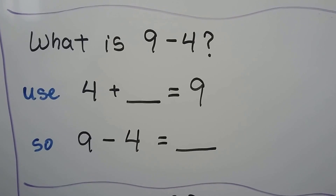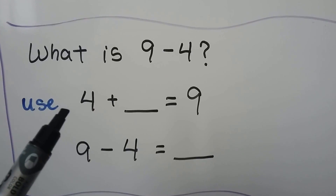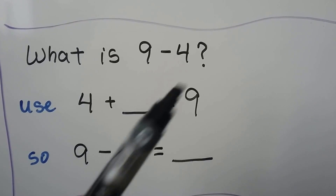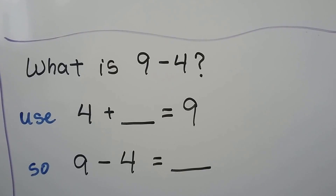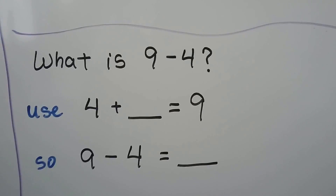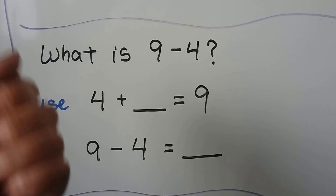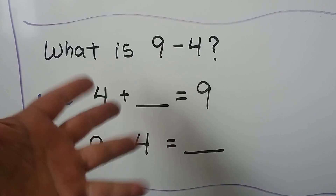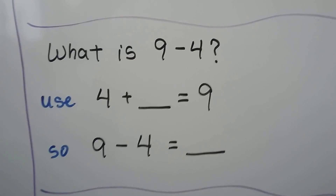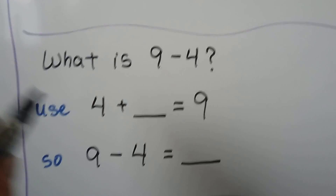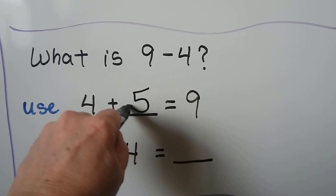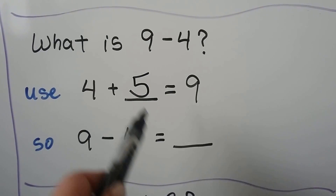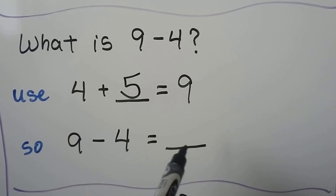What is 9 minus 4? We can use the addition: 4 plus some number is equal to 9. We can start at the 4 and count on: 4, 5, 6, 7, 8, 9. That's 5. So 4 plus 5 is equal to 9, and 9 minus 4 is equal to 5.